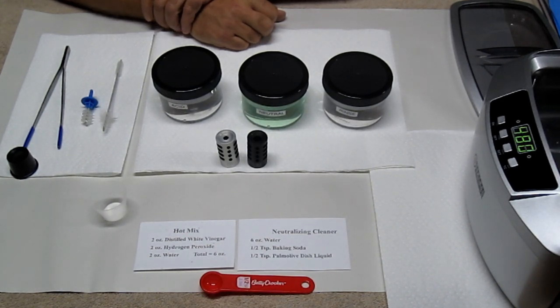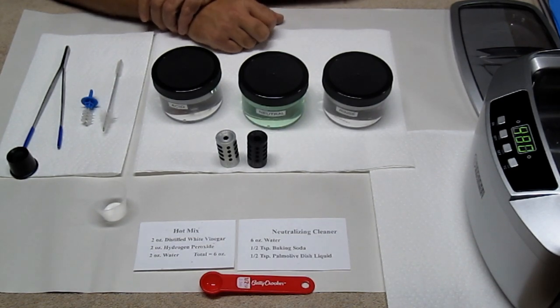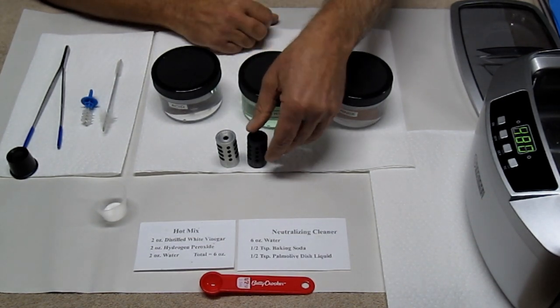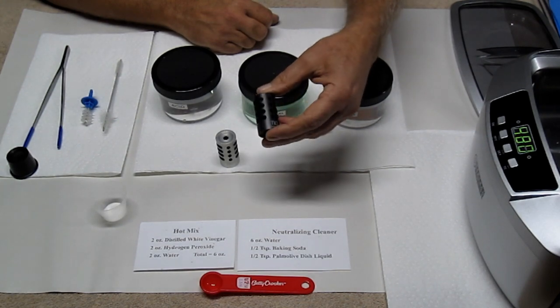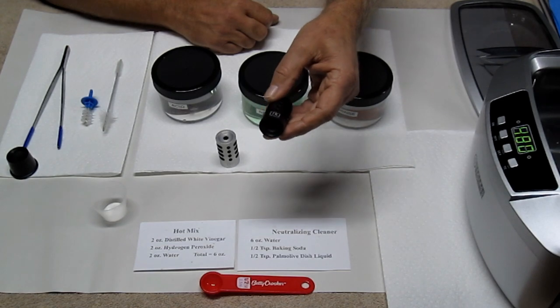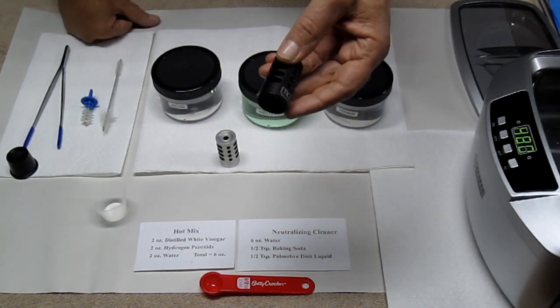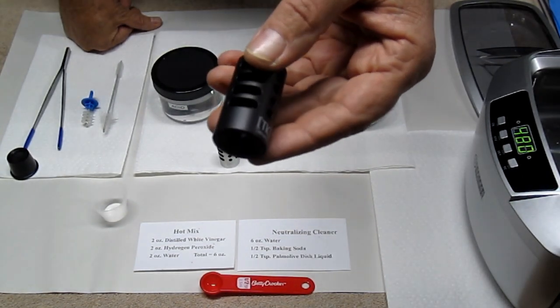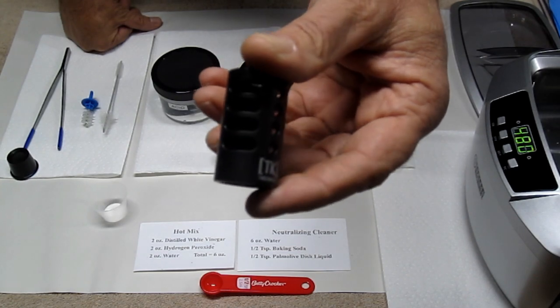Hello, I'm going to show you how to clean the Tandem Cross Game Changer Compensator. This is a black hard coated anodized Tandem Cross. Now this compensator has over 5,000 rounds put through it and you can see it is like brand new.